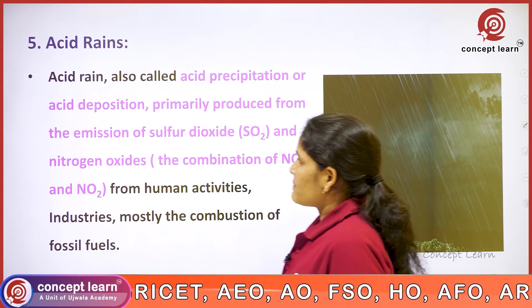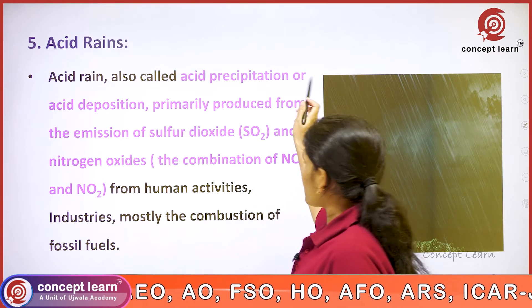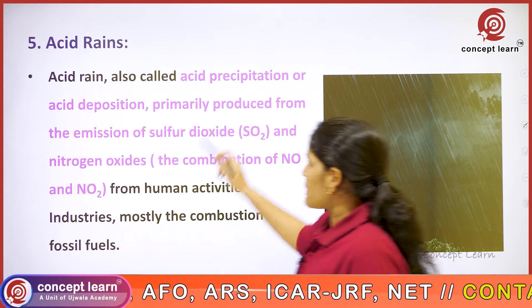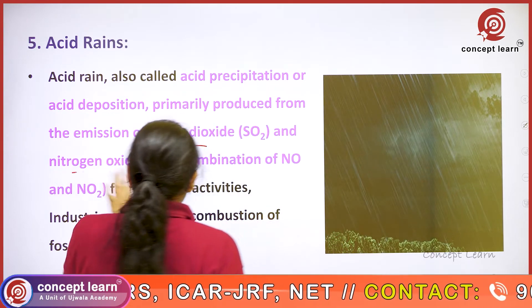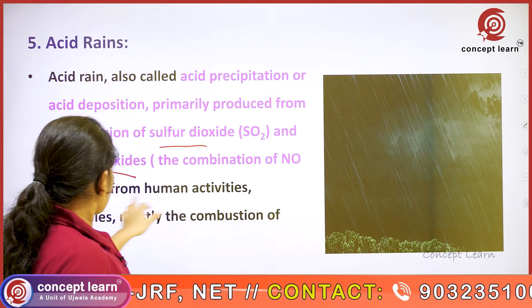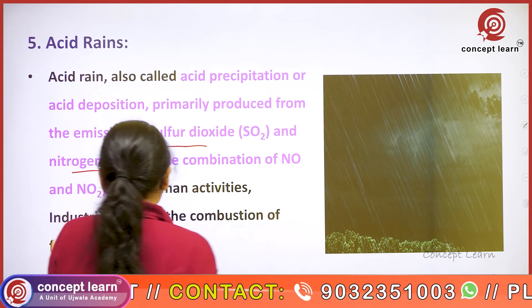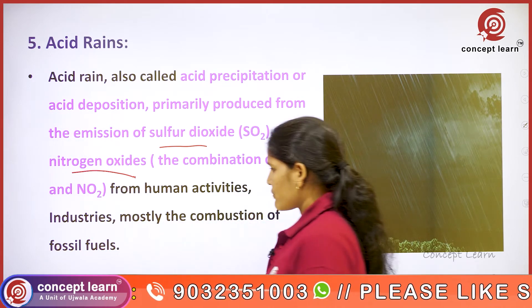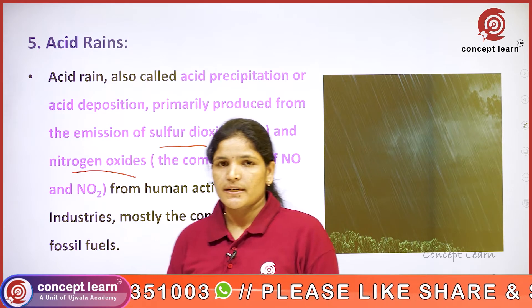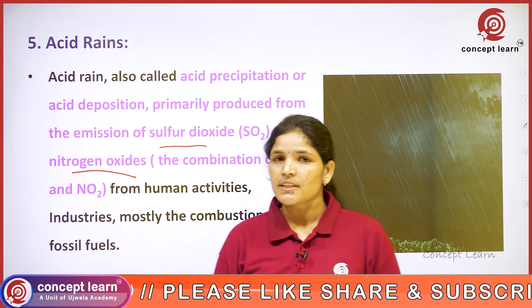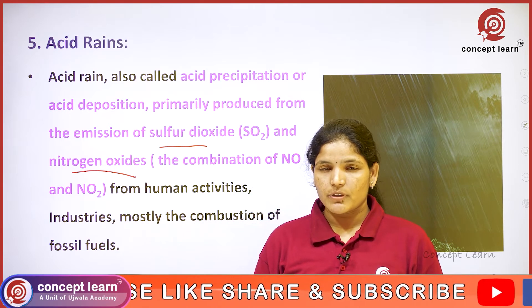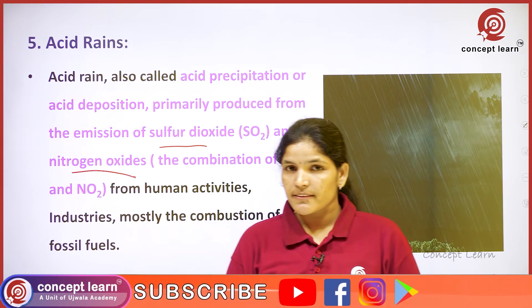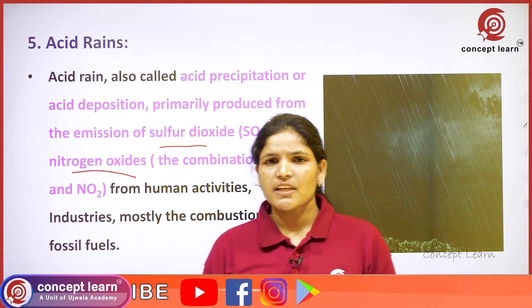Next is acid rain. Acid rain is also called acid precipitation or acid deposition. It is primarily produced from the emission of sulfur dioxide and nitrogen oxides from human activities. Mostly the combustion of fossil fuels — from vehicles and industrial waste — contains sulfuric and nitrous oxides which cause acid rain.